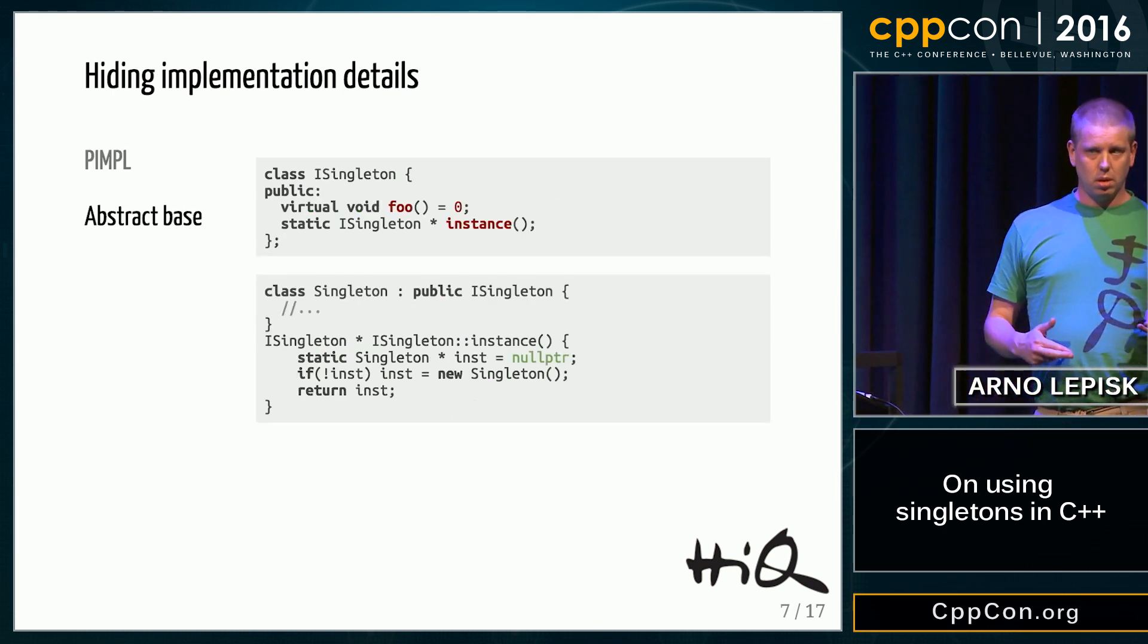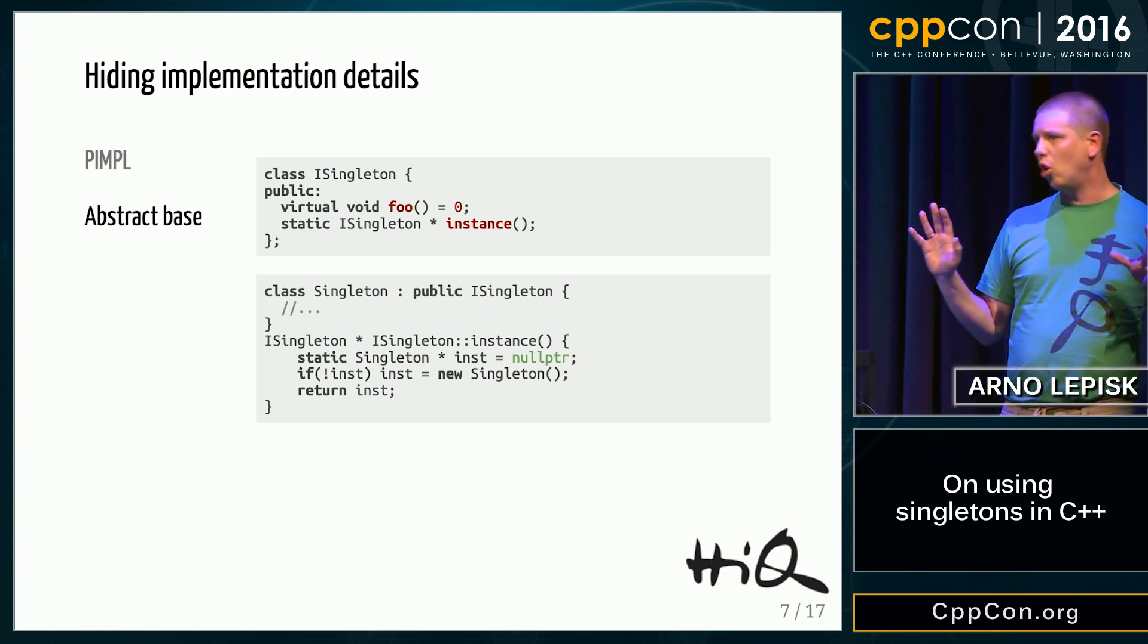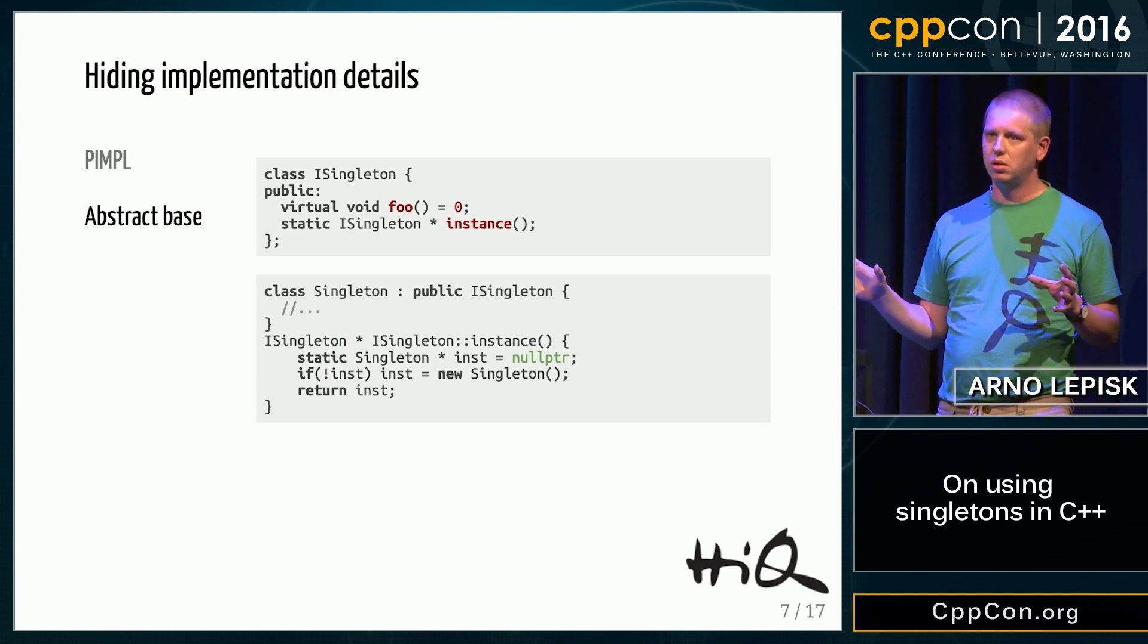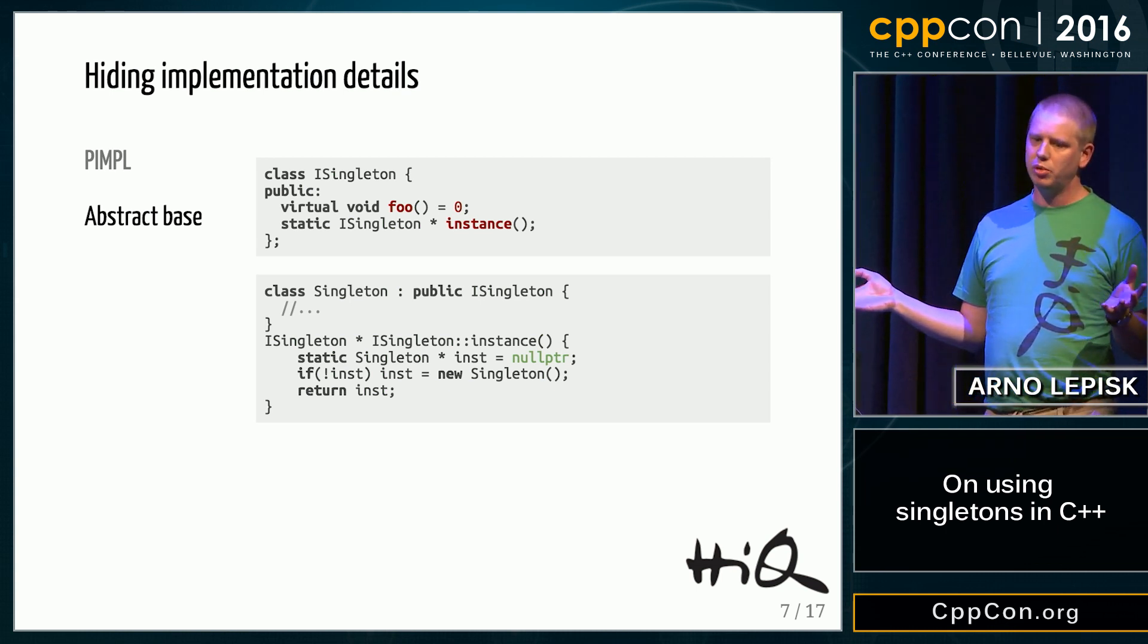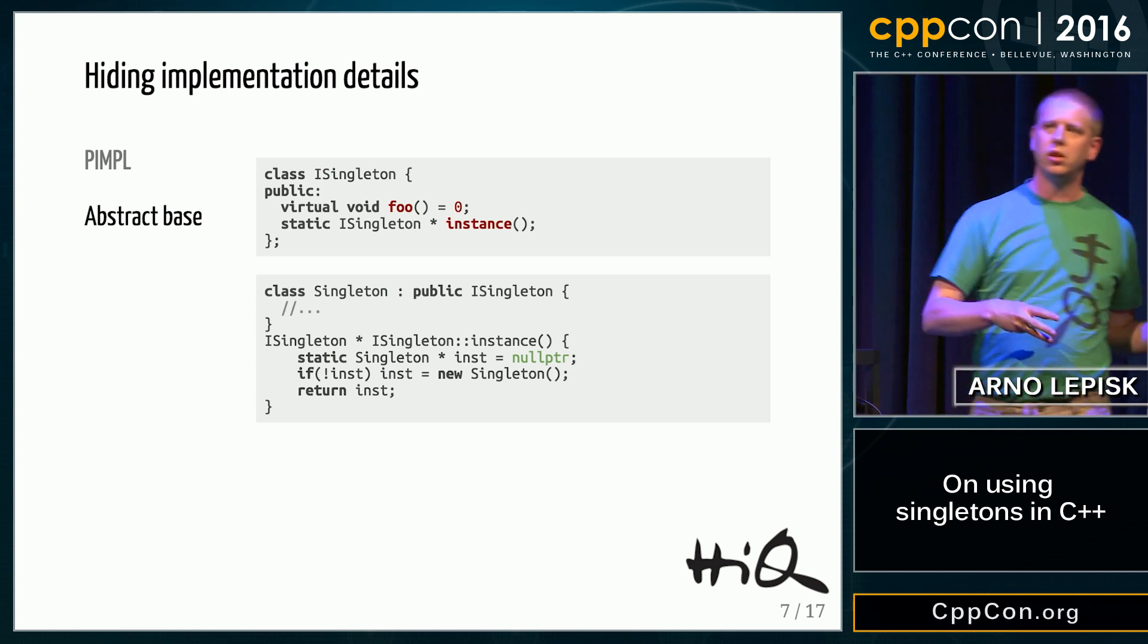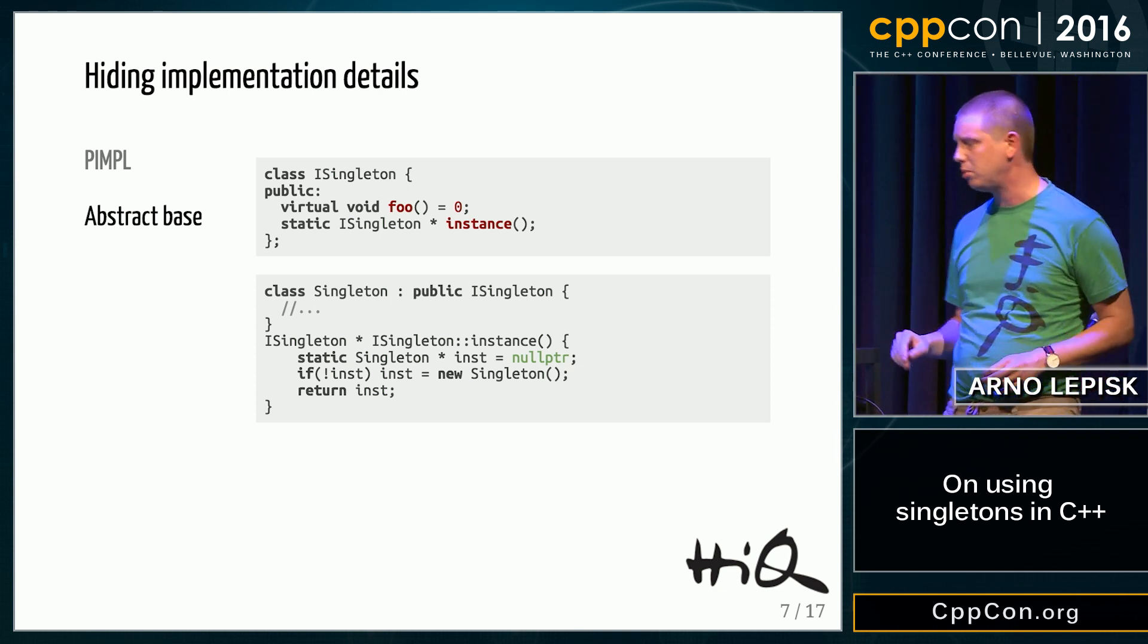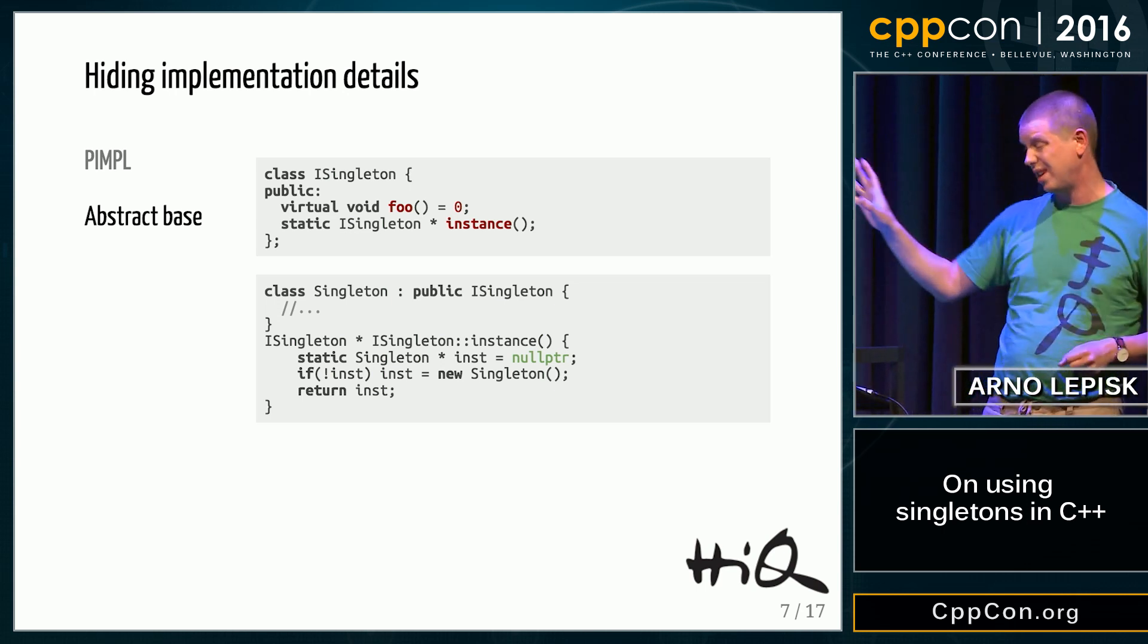Another way is to use this abstract base class for singleton. It feels a little bit odd because you use abstract base classes to make several variants of your class, and you have a singleton which there only is one. It must be strange, but I've seen this used a lot.